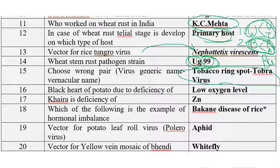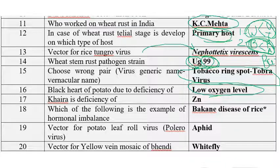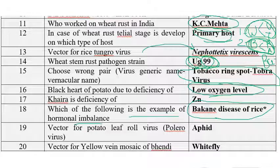Black heart of potato is due to low oxygen level or oxygen deficiency. Khaira disease of rice is caused by zinc deficiency. Which of the following is an example of hormonal imbalance? Bakanae disease of rice — we know that due to production of gibberellin, Bakanae disease will happen. Gibberellin is responsible for Bakanae disease.